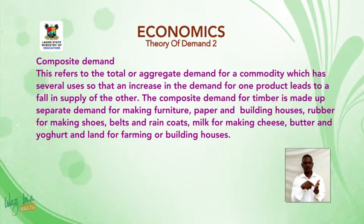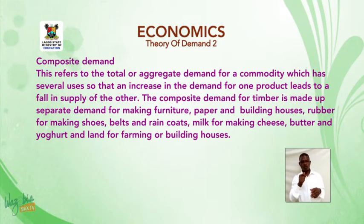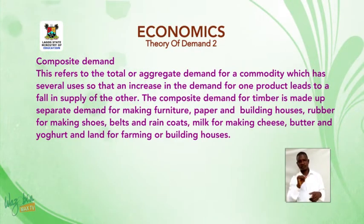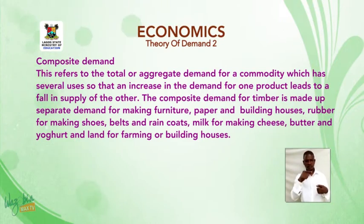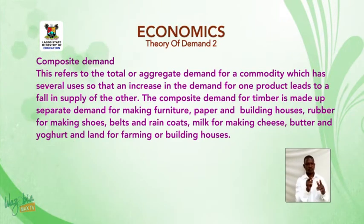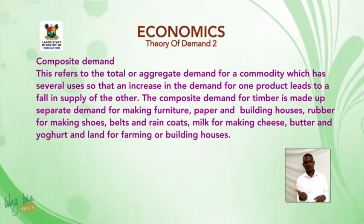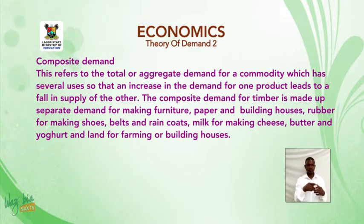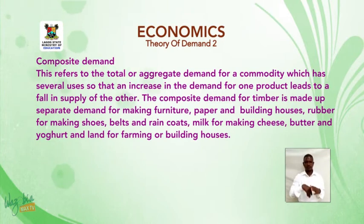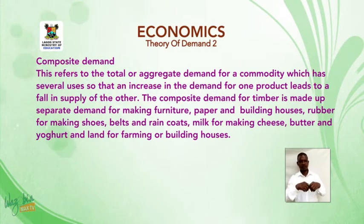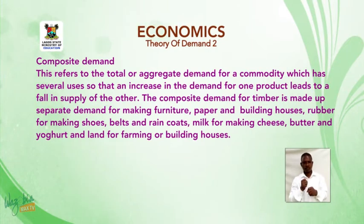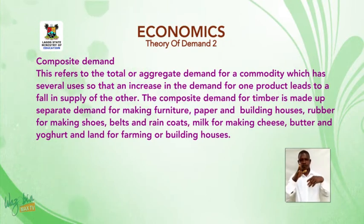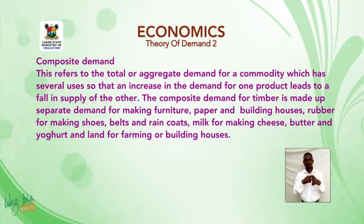Composite demand refers to the total or aggregate demand for a commodity which has several uses, so that an increase in the demand for one product leads to a fall in the supply of the other. Examples: the composite demand for timber is made of separate demands for making furniture, paper, and houses; rubber for making shoes, belts, and raincoats; milk for making cheese, butter, and yogurt; and land for farming or building houses.